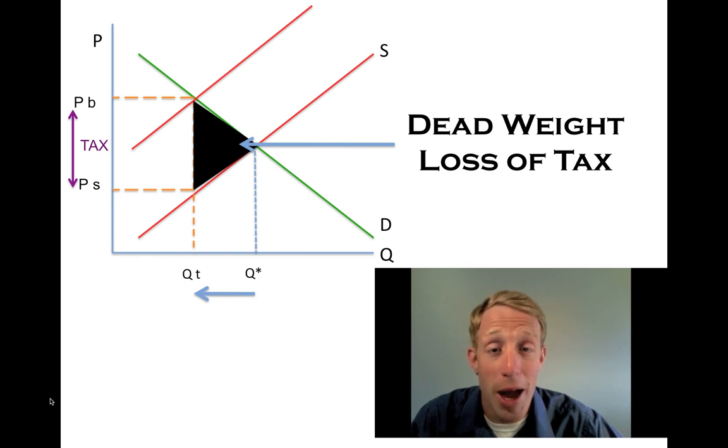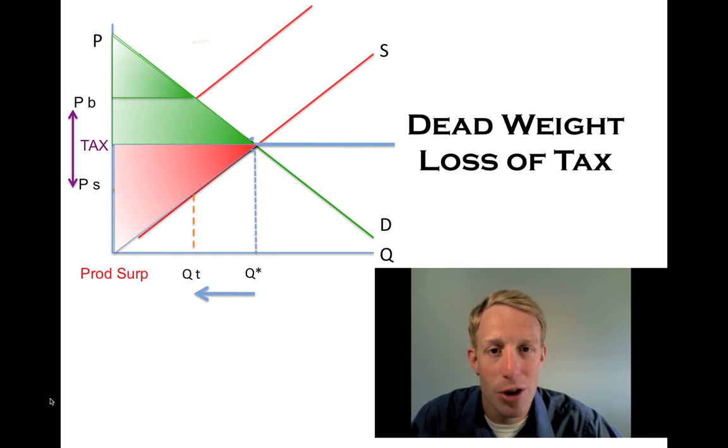Deadweight losses are bad because it used to be well-being that was generated. Now, the problem isn't that government gets revenue. Government does get revenue from this transaction. As we see here, the consumer surplus shrinks. It used to be the area above the equilibrium price and below the demand curve. But now the price has gone up, so the consumer surplus triangle shrinks.